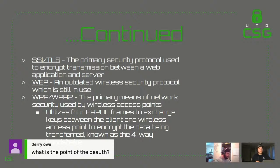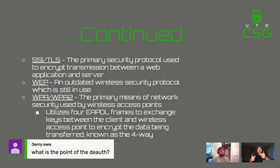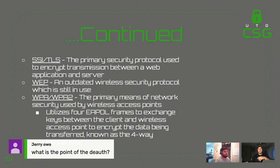With WEP, the biggest problem is it had a weak initialization vector, which was part of the four-way handshake. The server and client would transact it in a quasi-secure way — that was the basis of the rest of the encryption, which was stronger. To get back to that weak initialization vector we can solve for, we'd de-auth them to force reconnection, then see the handshake and the weak initialization vector. We could solve for it and then we'd pwned them.